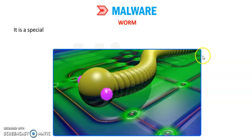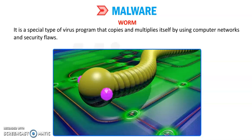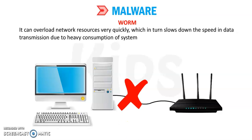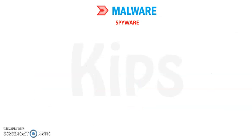Next is the worm. A worm is a special type of virus program that copies and multiplies itself by using computer networks and security flaws. It can replicate itself and can overload network resources very quickly, which in turn slows down the speed of data transmission. Due to heavy consumption of system resources, it can affect computer speed, system memory, or network bandwidth. Worms are similar to viruses but do not depend on another program to replicate — they use the power of networking to replicate and execute. Worms spread at very high speed. There are various types of worms, including email worms, pure worms, spyware, and adware.